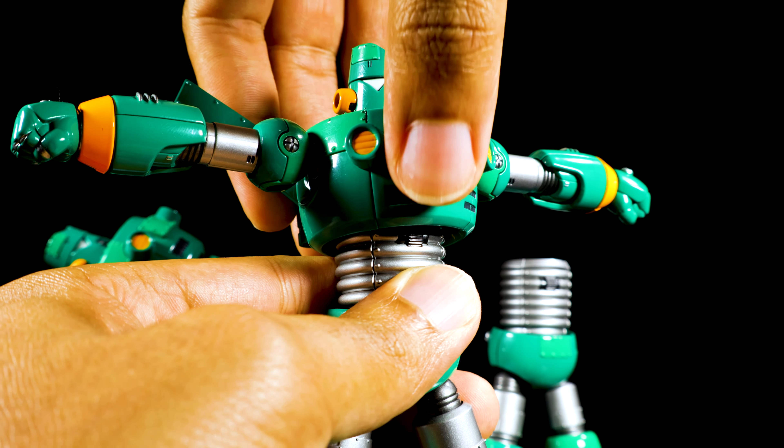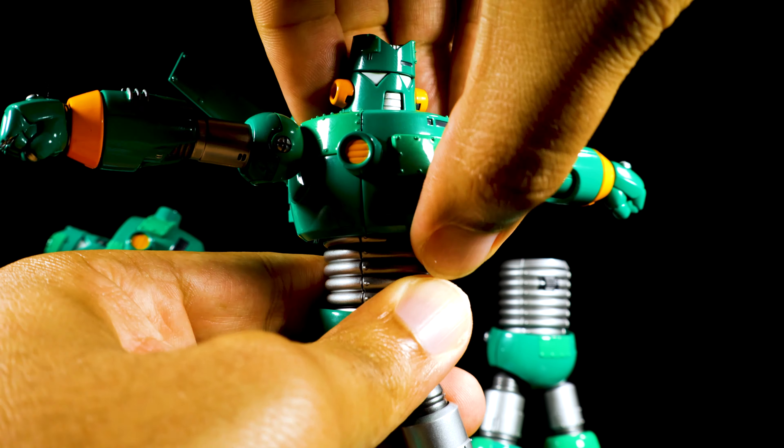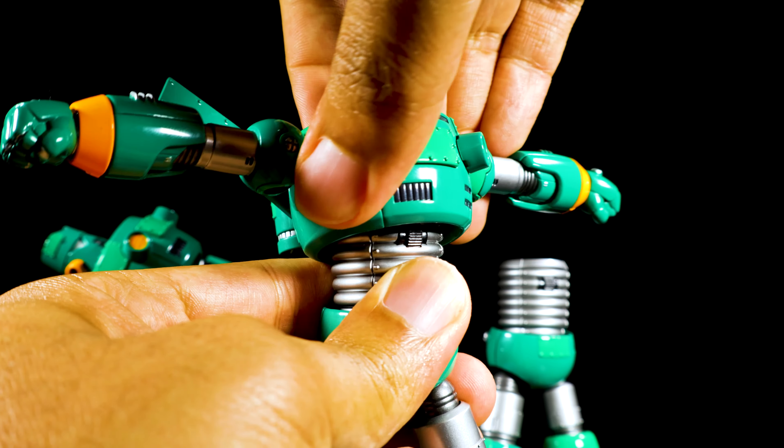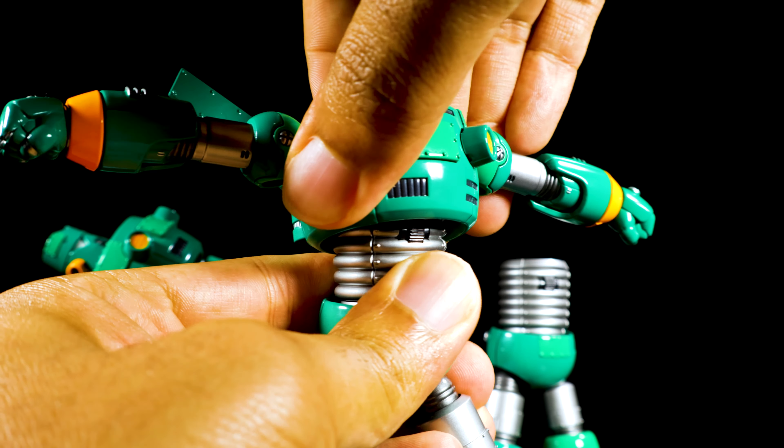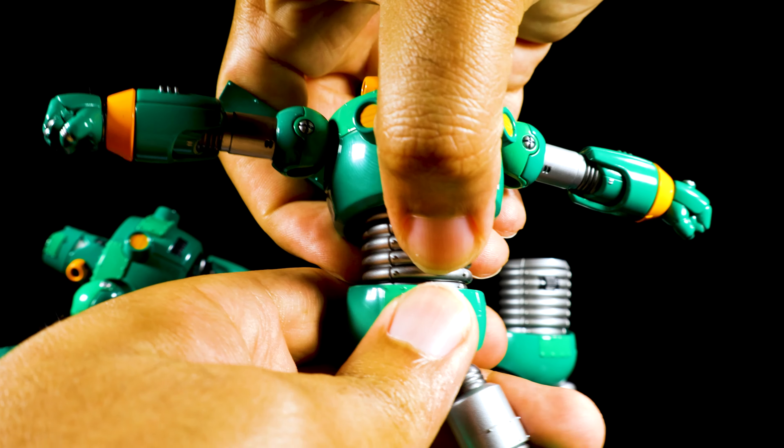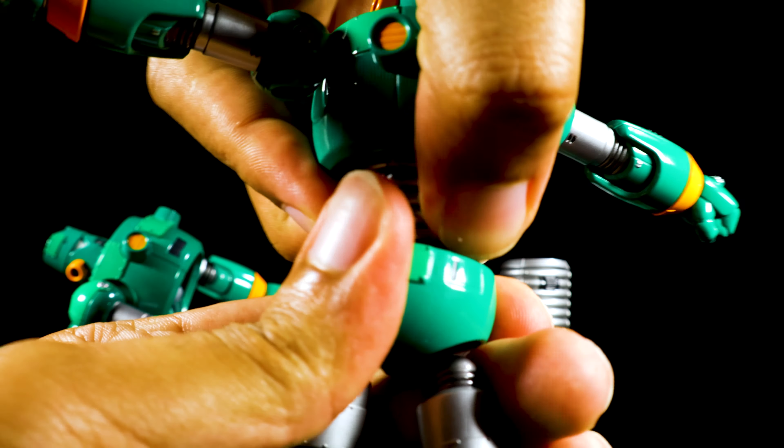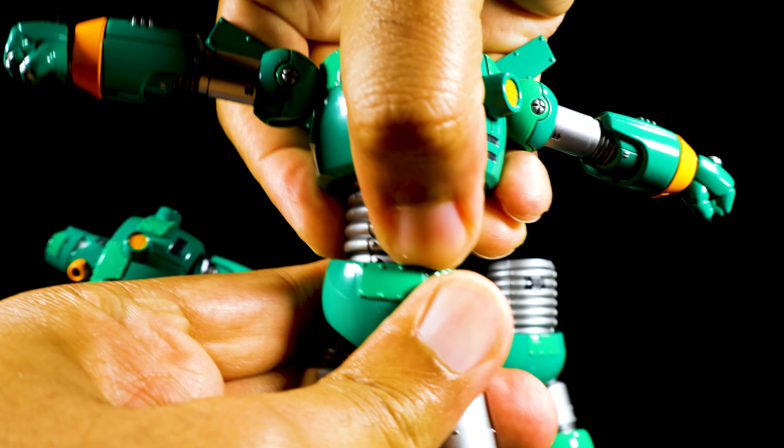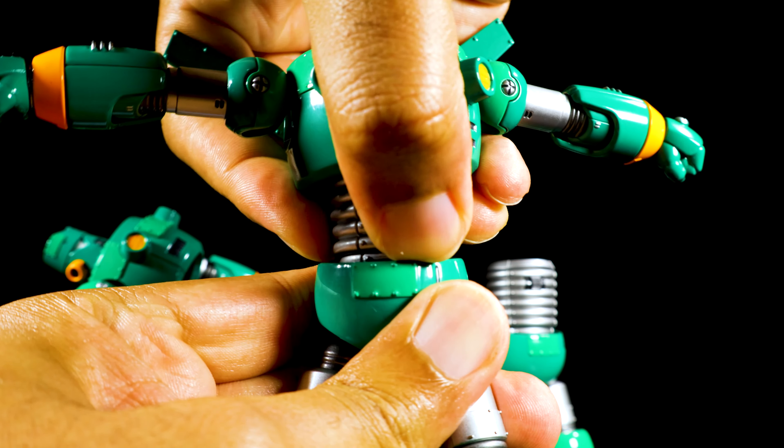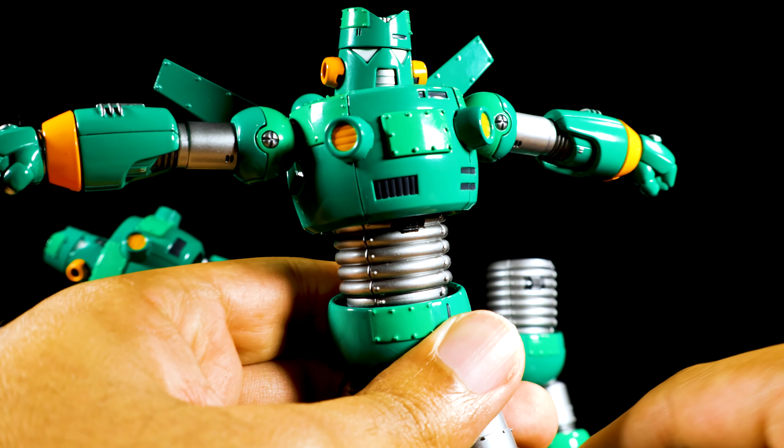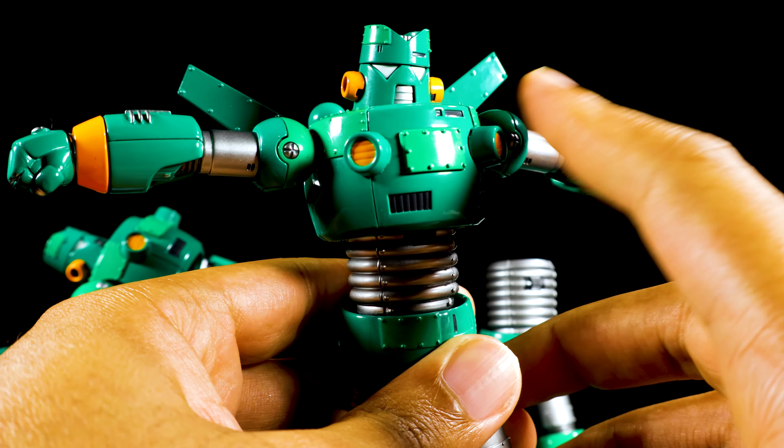So in the upper chest, we can lean forward this much, backward this much and cannot move side to side much at all. In the waist, we can lean forward, backward, twist side to side and lean side to side. Now again, just be careful and mindful when moving the upper chest.